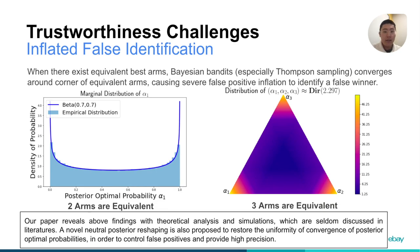The second trustworthiness challenge is inflated false identification. When there exist equivalent best arms, Bayesian-bandit Thompson sampling converges around a corner of equivalent arms, causing severe false-positive inflations — that is, identifying a false winner even when there is actually no winner. Our paper reveals these findings and proposes novel ideas to restore uniformity and control false-positives for better precision.